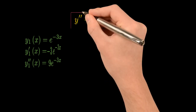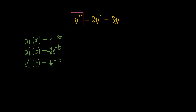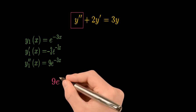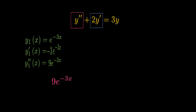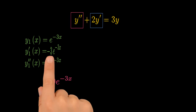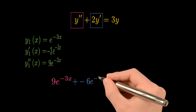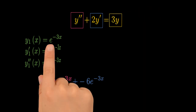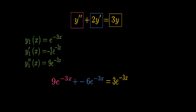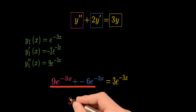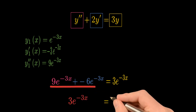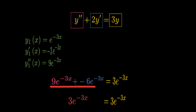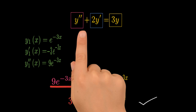Let's verify. We have the second derivative of y, which is nine e^(−3x), plus two times the first derivative, which is two times negative three e^(−3x), giving us negative six e^(−3x). This needs to equal three times y, which is three e^(−3x). And indeed, nine e^(−3x) minus six e^(−3x) equals three e^(−3x). So y₁ is indeed a solution to this differential equation.